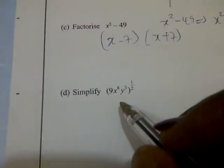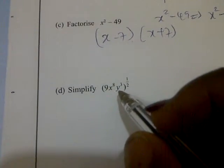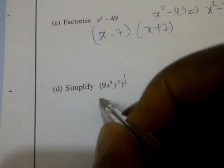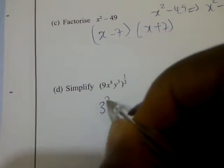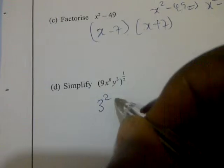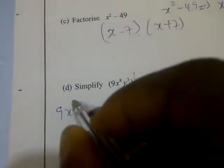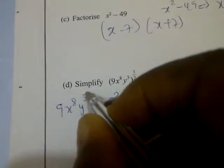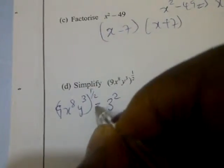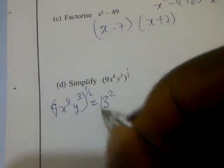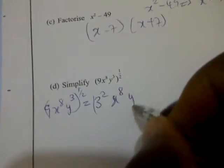Question 14d: simplify (9x^8y^3)^(1/2). So this is going to be (3² · x^8 · y^3)^(1/2), which gives us 3^(2 × 1/2) · x^(8 × 1/2) · y^(3 × 1/2).